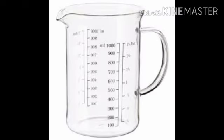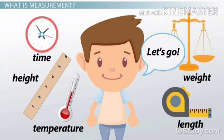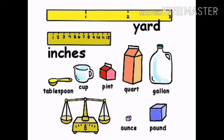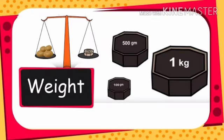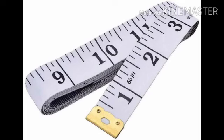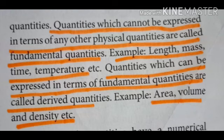We also derive physical quantities along with their units. What is a physical quantity? Physical quantities are classified into two types: one is fundamental quantity and another is derived quantity. Quantities which cannot be expressed in terms of any other physical quantities are called fundamental quantities — for example, length, mass, time, temperature, etc.